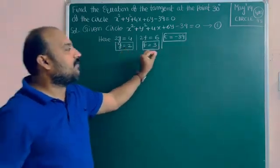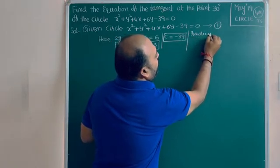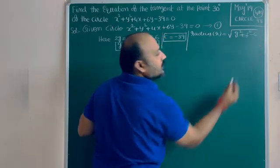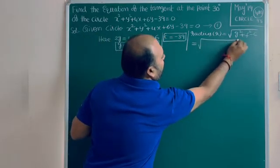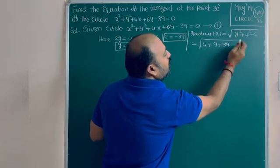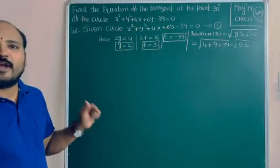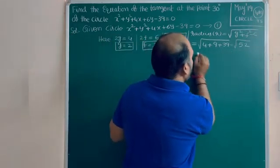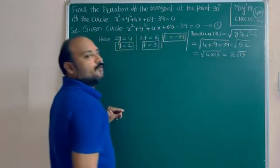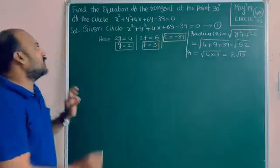After getting the values of g, f, and c, calculate the radius. The formula is r = √(g² + f² - c), which equals √(2² + 3² - (-39)) = √(4 + 9 + 39) = √52. This can be written as √(4 × 13), so taking 4 outside we get 2√13. Therefore the radius r = 2√13. We now have g, f, c values — this completes the first step.